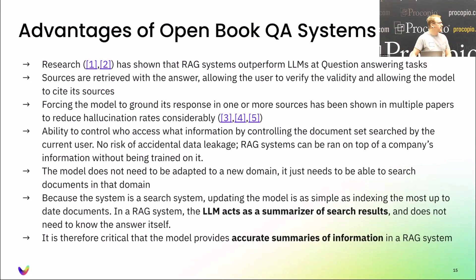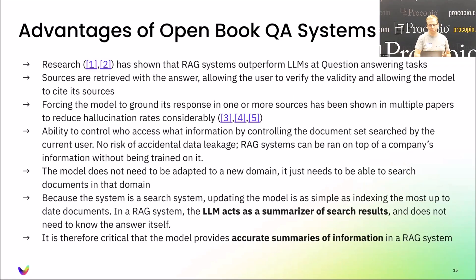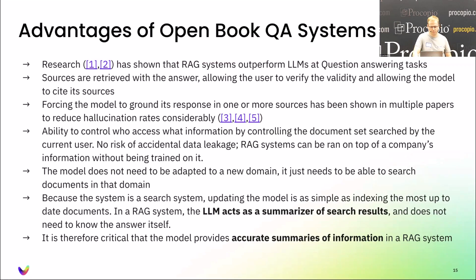Open-book Q&A systems solve a lot of these problems. This is also called RAG, Retrieval Augmented Generation. This is basically using a search index or some knowledge store to help the model answer questions rather than relying on its own knowledge.